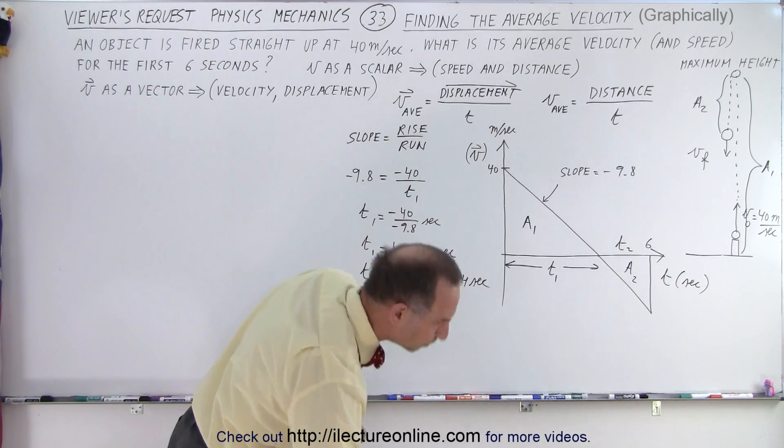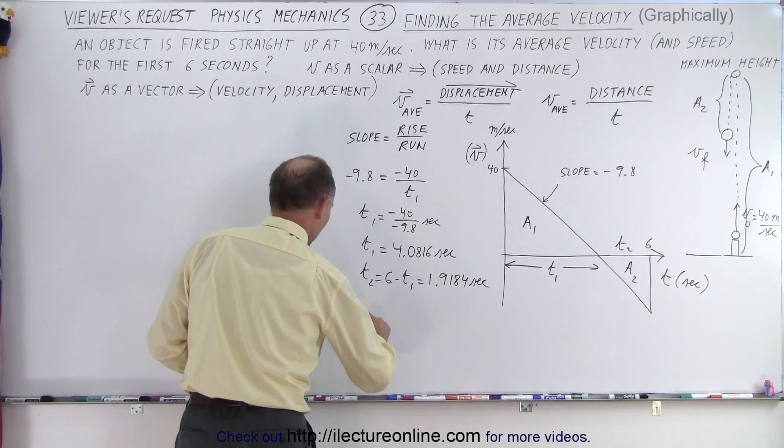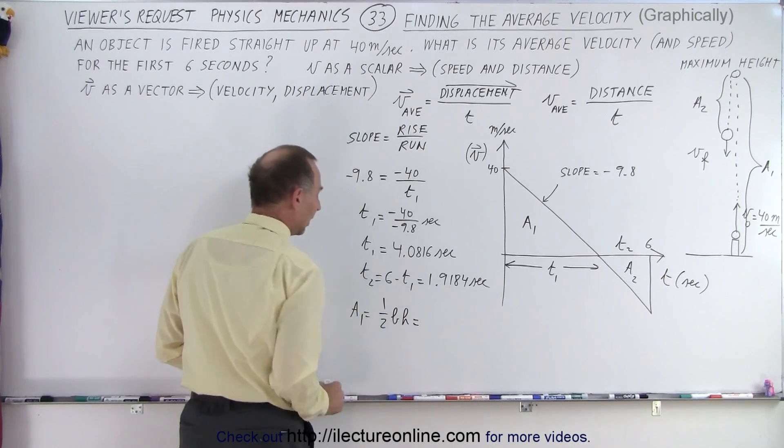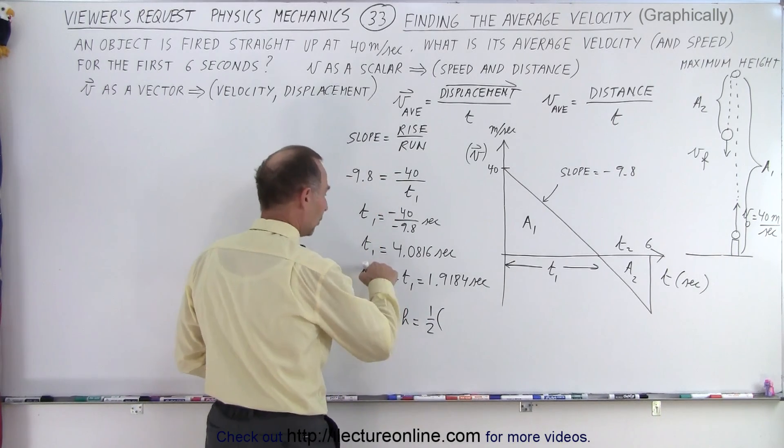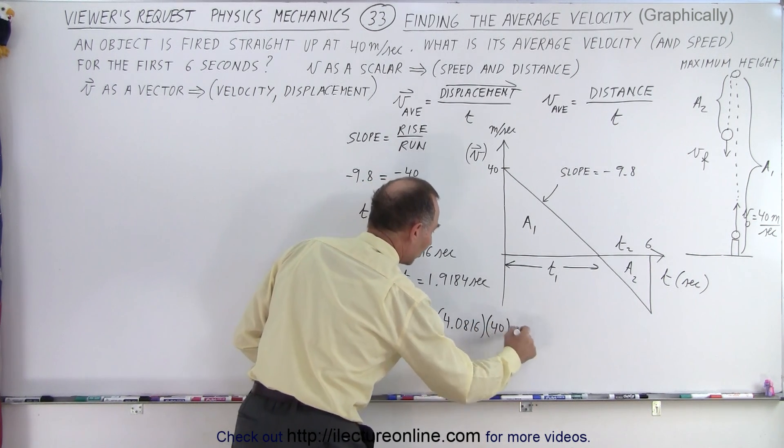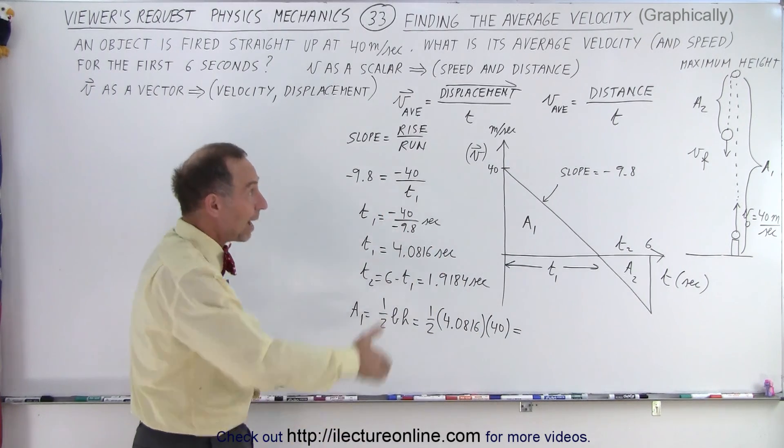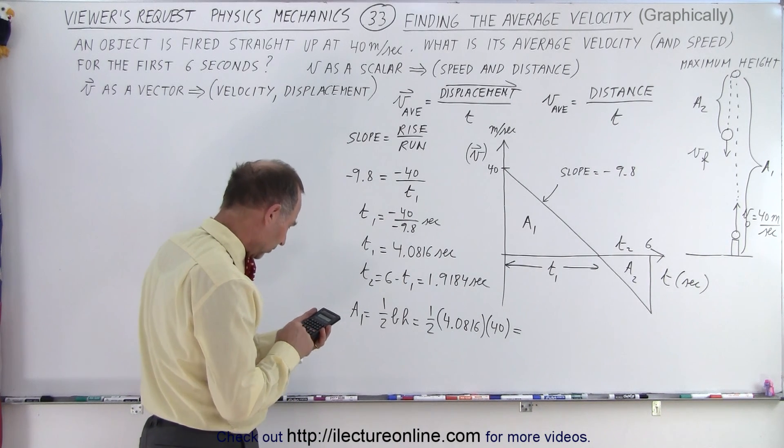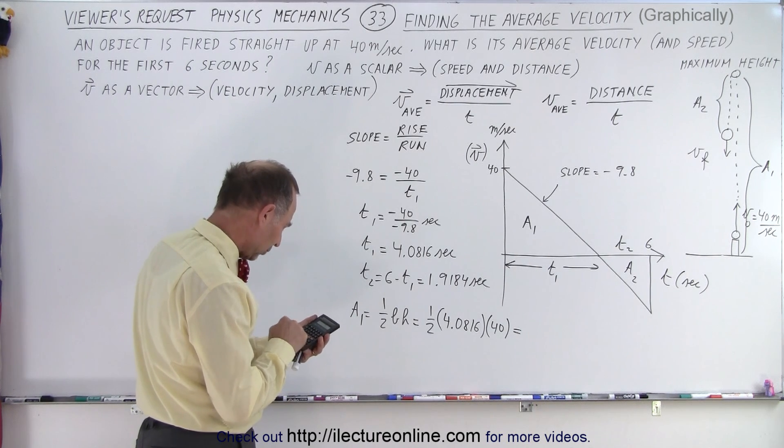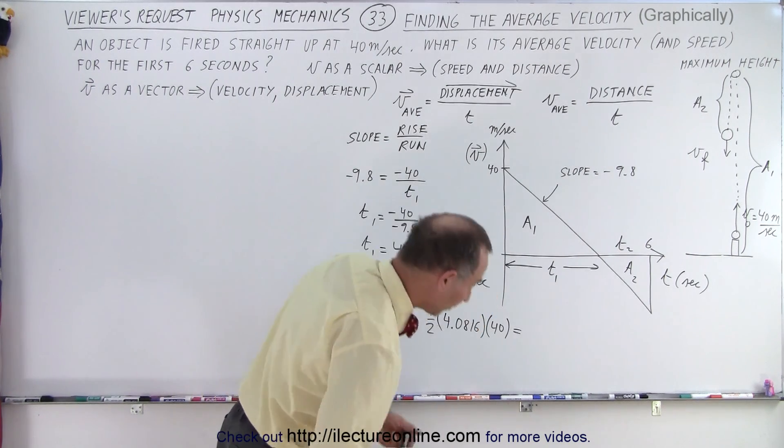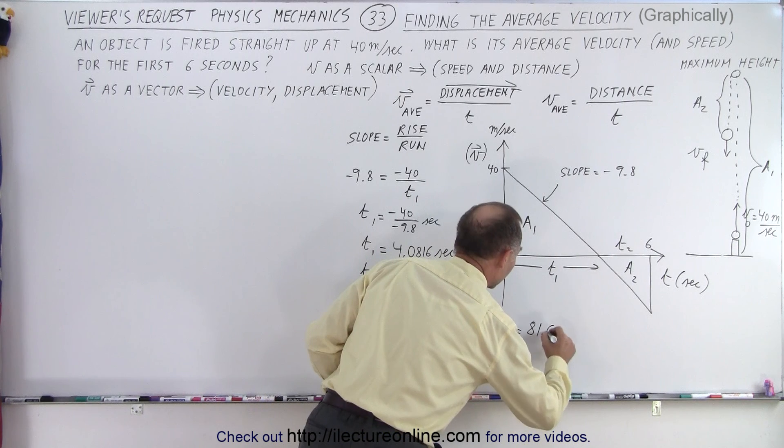Now we need to find the areas. A1 is equal to, since it's a triangle, 1 half the base times the height. So that would be 1 half the base, which is T1, which is 4.0816, times the height, which is 40. This gives us the area A1, which tells us how high the ball will go to reach its maximum height. That's 81.63 meters.